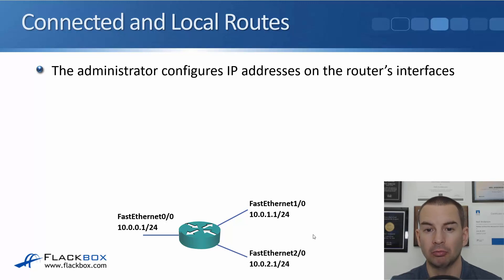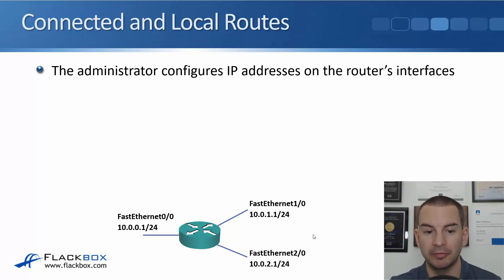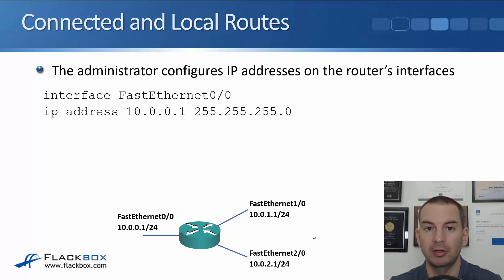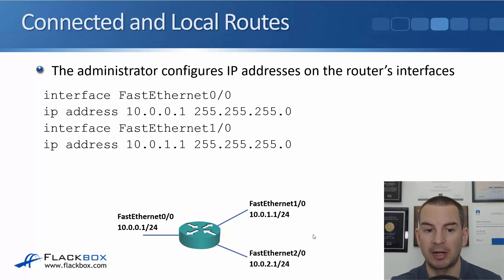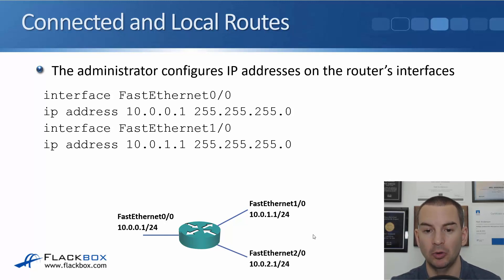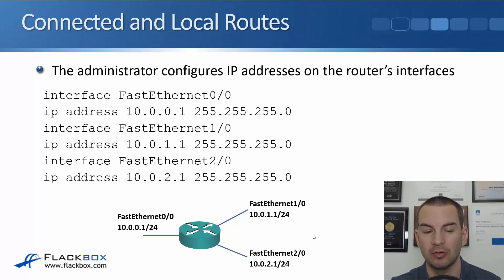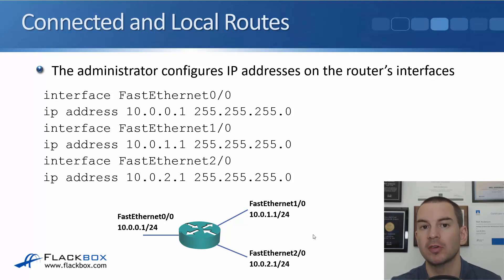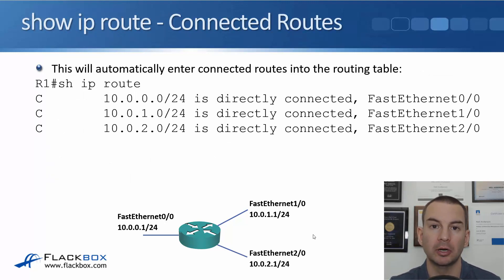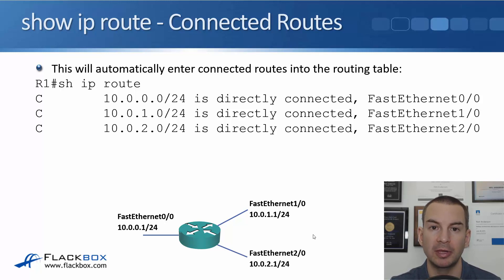For connected and local routes, one of the first things you're going to do on the router is configure IP addresses on its interfaces. In the example, we have a router with three interfaces. On FastEthernet 0/0, we configure IP address 10.0.0.1. On FastEthernet 1/0, the IP address is 10.0.1.1 with subnet mask 255.255.255.0. And FastEthernet 2/0 gets IP address 10.0.2.1. When you configure IP addresses on the router's interfaces, it will automatically add corresponding routes into the routing table.